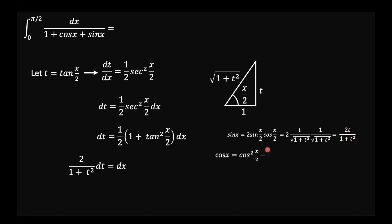Cosine x equals cos squared(x/2) minus sin squared(x/2). Cos squared(x/2) is [1 over sqrt(1 plus t squared)] squared, which is 1 over (1 plus t squared). Sin squared(x/2) is [t over sqrt(1 plus t squared)] squared, which is t squared over (1 plus t squared). Subtracting these gives cosine x in the t domain as (1 minus t squared) over (1 plus t squared).